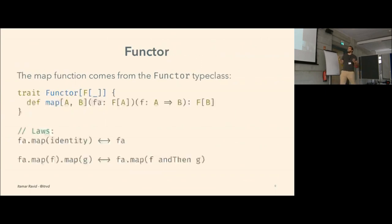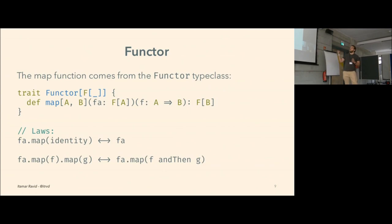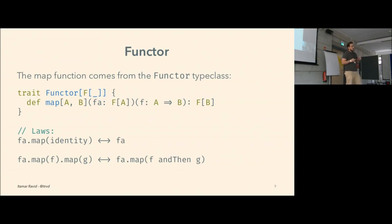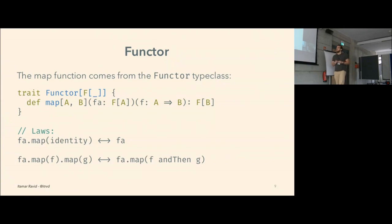Let's focus for a moment on the type class definition itself. The type class is defined just by the map function. Its meaning is: if we give the map function an F of A and a function from A to B, we get back an F of B. This type class is also governed by a few laws. The identity law says that mapping with the identity function is a no-op, and it should also preserve composition — mapping with f and then g is the same as mapping with f composed with g.